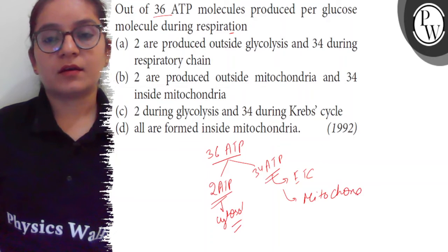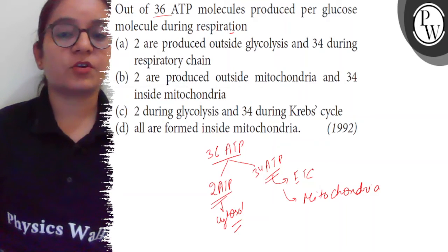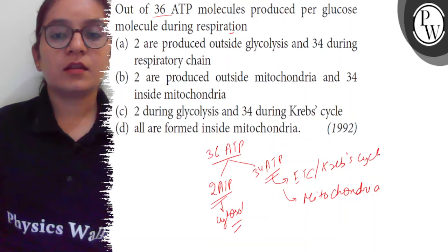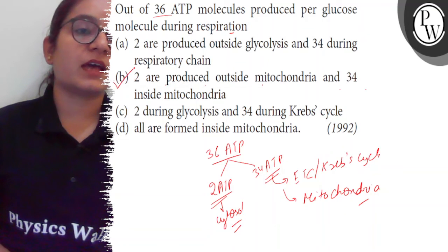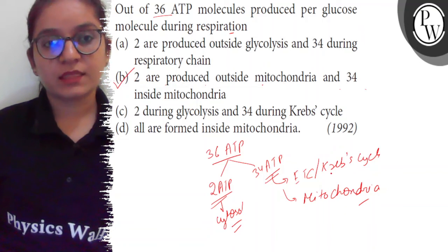They all are produced during the electron transport chain and Krebs cycle in mitochondria. So 2 are produced outside mitochondria and 34 inside mitochondria, and the correct answer here is option B. Thank you.